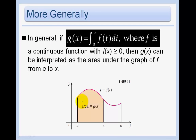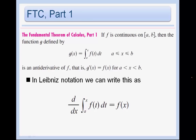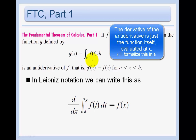In general, if g of x equals the integral from a to x of f of t dt, where f is continuous and f of x is always greater than or equal to 0, meaning the graph is always above the x-axis, then g of x can be interpreted as the area under the graph of f from a to x. This is the accumulator function — as x gets greater, we accumulate more and more area. The first part of the Fundamental Theorem says that if g of x equals the integral from a to x of f of t dt, then the derivative of g is just f evaluated at x.